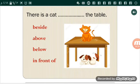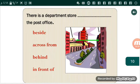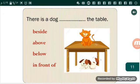There is a cat, space, the table. Excellent, above. There is a department store, متجر, space, the post office. The green arrow, so the answer is across from. You are so excellent. There is a dog, space, the table. Below, أسفل.